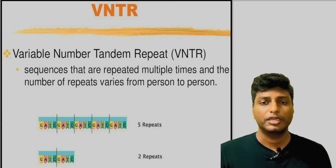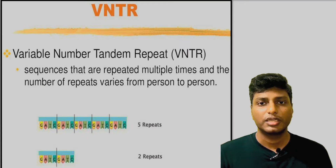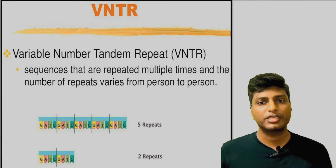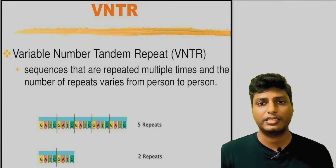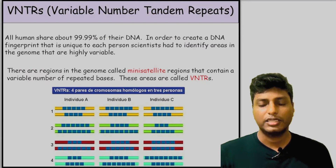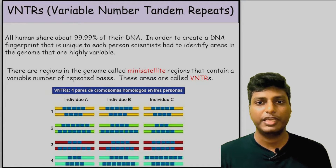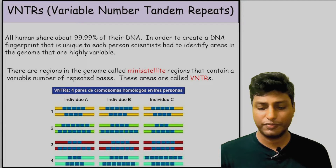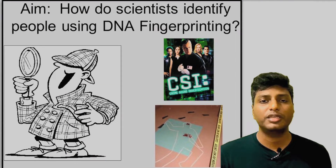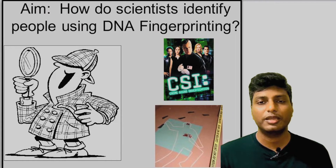VNTR stands for Variable Number Tandem Repeats. It is called 'variable number' because the number of VNTRs in every person is different — for example, I can have two VNTRs while some other person can have three VNTRs. These VNTRs contain highly repetitive DNA sequences and are extremely important. The VNTR sequences are used in a method known as DNA fingerprinting.